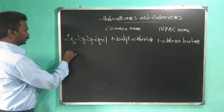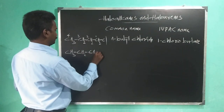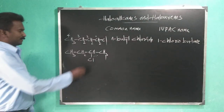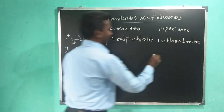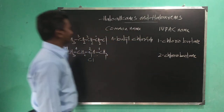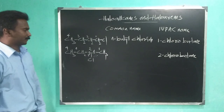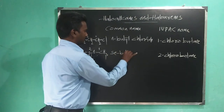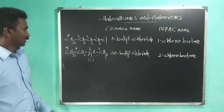Next compound: CH3-CHCl-CH2-CH3. The IUPAC name is 2-chlorobutane. The common name — chlorine is linked with a secondary carbon atom — so it is secondary butyl chloride.